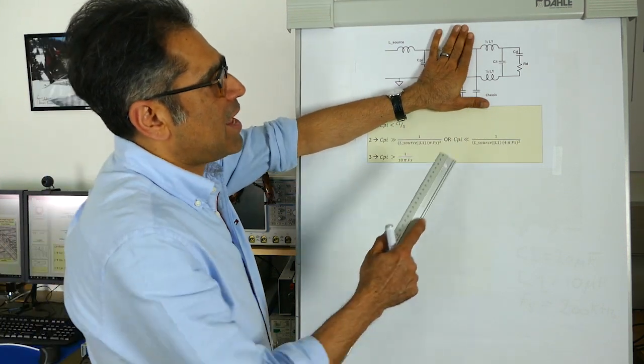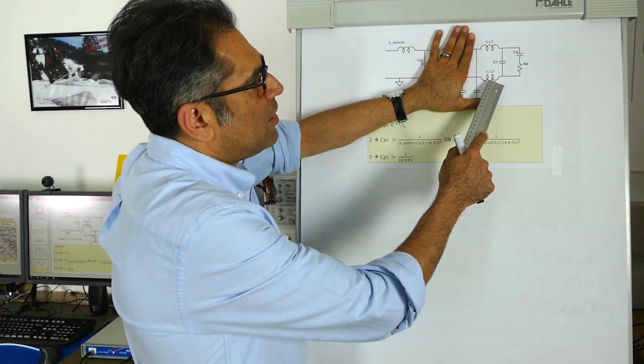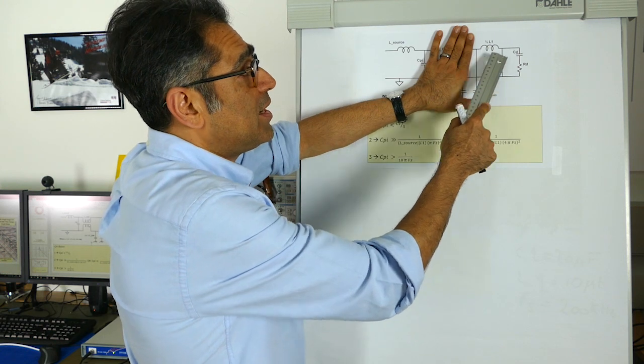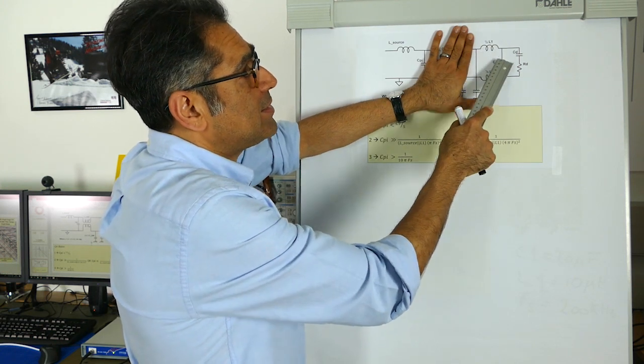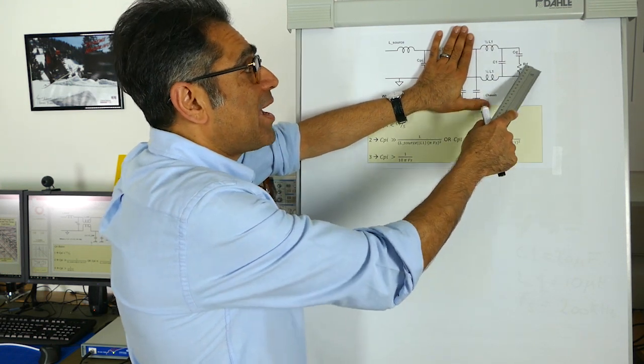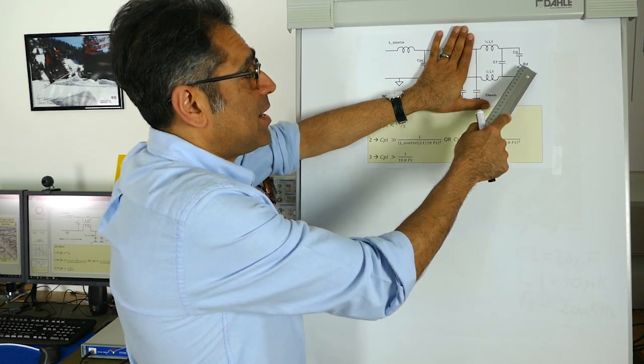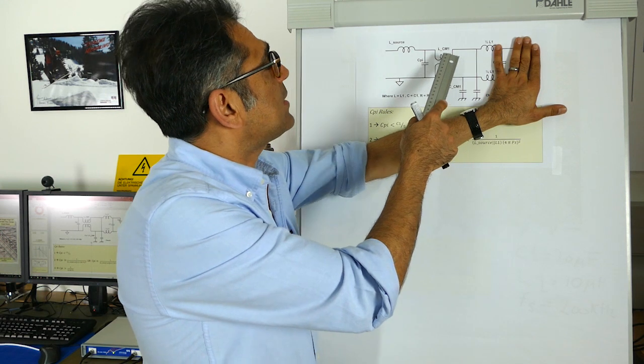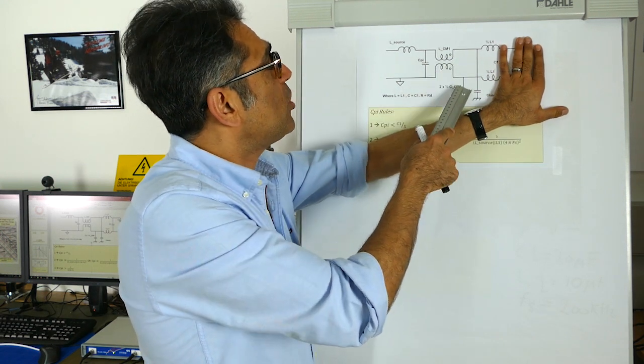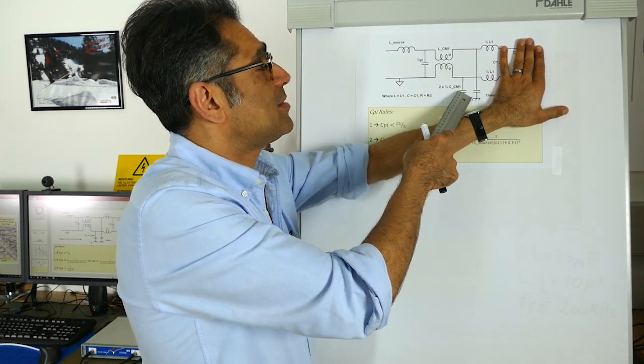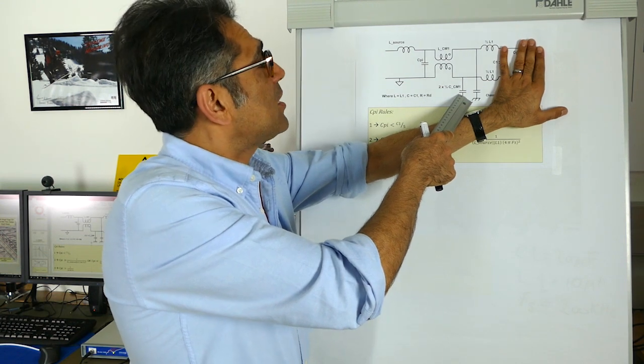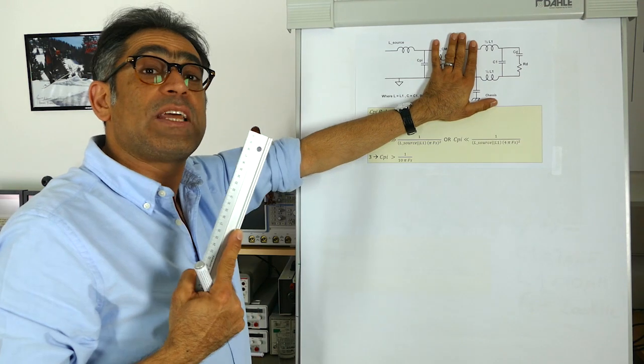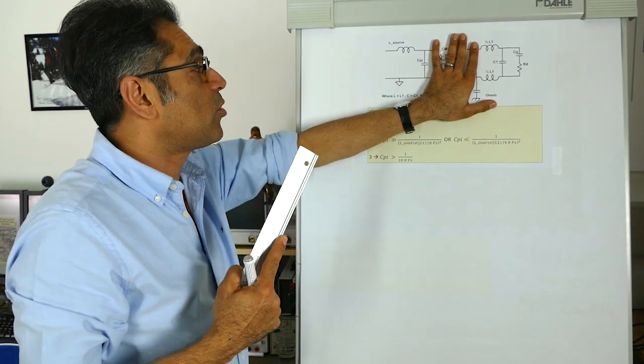We've already discussed how you design and calculate the value of the differential mode components, this is L1 and C1 and the reason why we have the damping capacitor and the damping resistor. We have also discussed how we calculate and size our common mode choke and then the common mode capacitance that goes to chassis. The final thing we're going to talk about is this extra capacitor that we can add in order to get just some little bit more of attenuation.